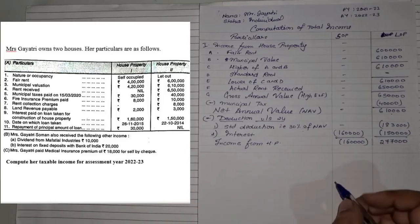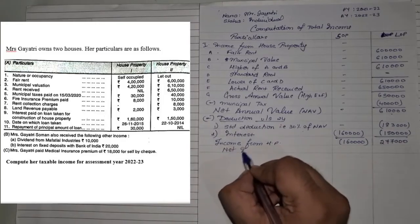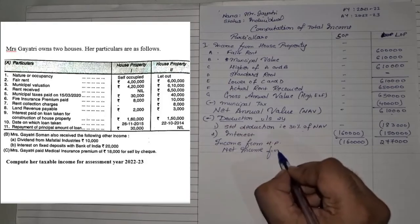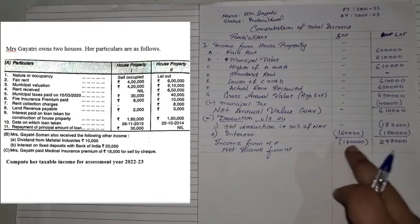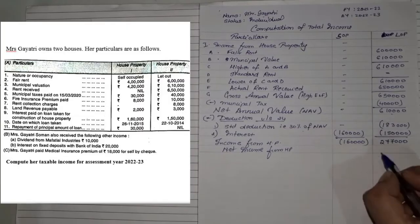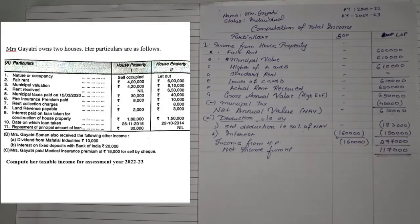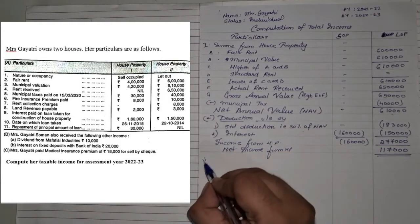Your final value — net income from house property — is positive 2 lakhs 77,000 minus 1 lakh 60,000, which comes to 1,17,000. That's your income from house property. Now to this, we need to add income from other sources — that's our second part.